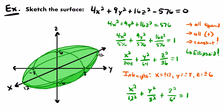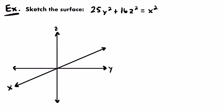Let's move on to the next example. We want to sketch the surface represented by: 25y² + 16z² = x². The first thing I notice is that we do have three variables — x, y, and z — and all three of them are squared.